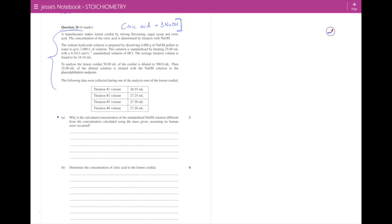Jumping into part A. Why is the calculated concentration of the standardized NaOH solution different from the concentration calculated using the mass given? Reading through the question, a manufacturer makes lemon cordial by mixing the following ingredients. I know that's probably not something I need to concentrate on so I'm going to cross that out. Next part of the question: sodium hydroxide solution is prepared by dissolving four grams of NaOH pellets in water to give one liter of solution.